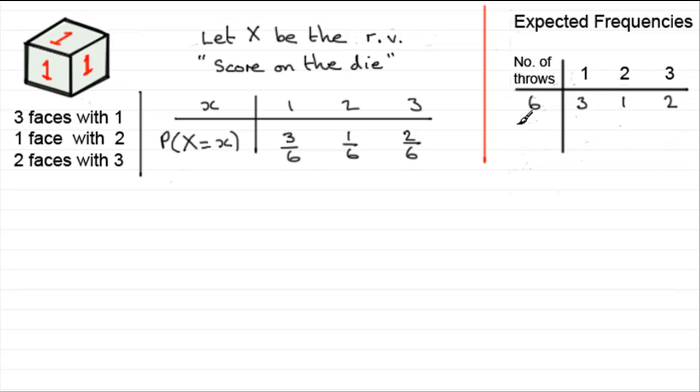And if I threw the die, say, 12 times, 3 in every 6 results in a 1. So it must be 6 in every 12, must also result in a 1. So I would expect 6 1s. Similarly, to get a 2, 1 in every 6, if I threw it 12 times, it must be twice as many. So I'd expect 2 here. And for the 3, instead of it being the 2 here, it's now going to be 4.